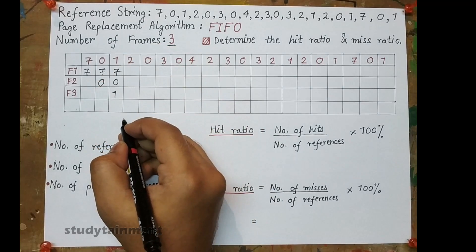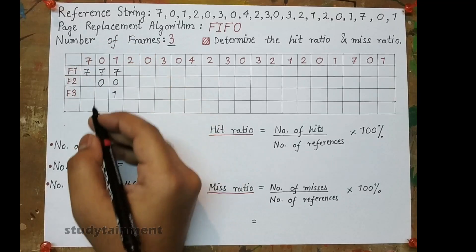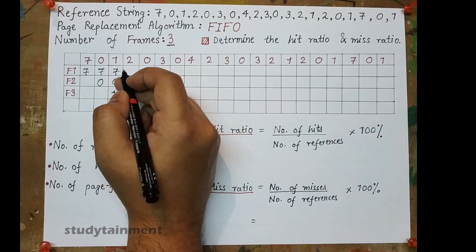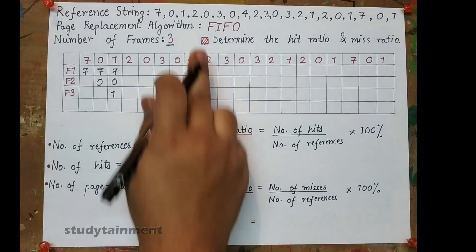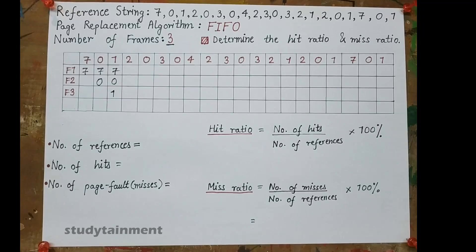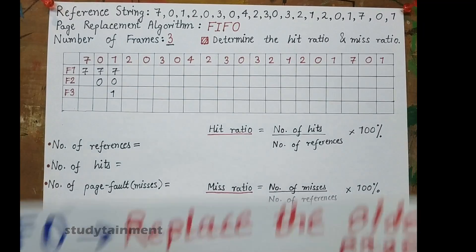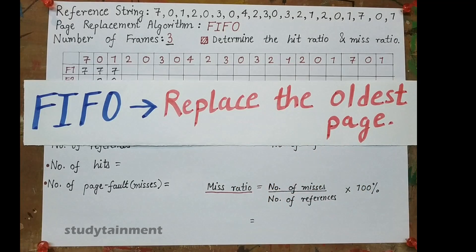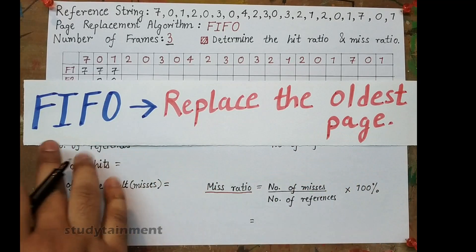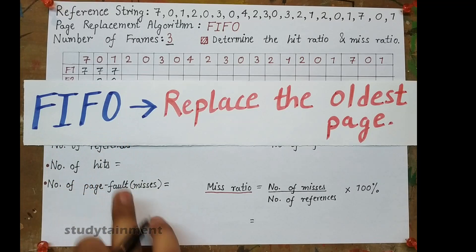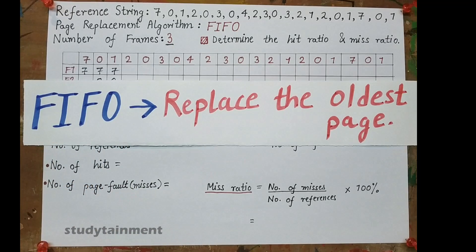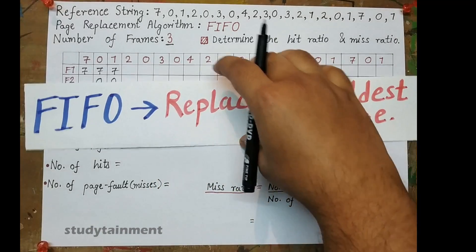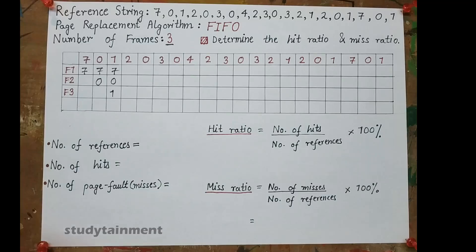Now all three frames are occupied. We have to replace one of 7, 0, or 1. This is where the concept of FIFO comes into action. FIFO stands for First In First Out — we replace the oldest page, meaning the page which came first into memory.